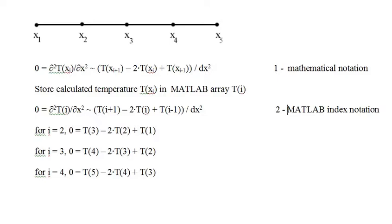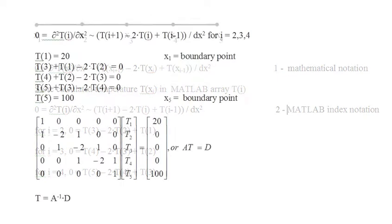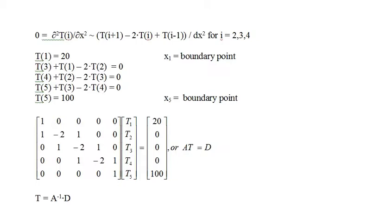Using index notation, we have linear equations for each of the interior grid points. For i equals 2: 0 equals T3 minus 2 times T2 plus T1. For i equals 3: 0 equals T4 minus 2 times T3 plus T2. For i equals 4: 0 equals T5 minus 2T4 plus T3. From the model we have a linear equation for each interior point. We also have linear equations for the boundary points: T1 equals 20 and T5 equals 100.